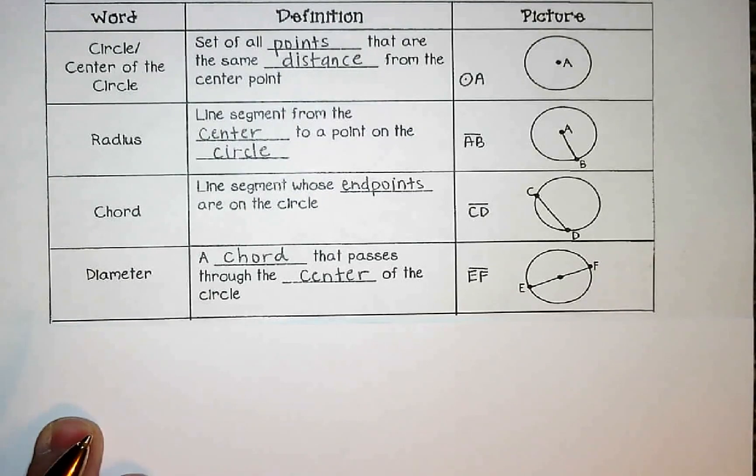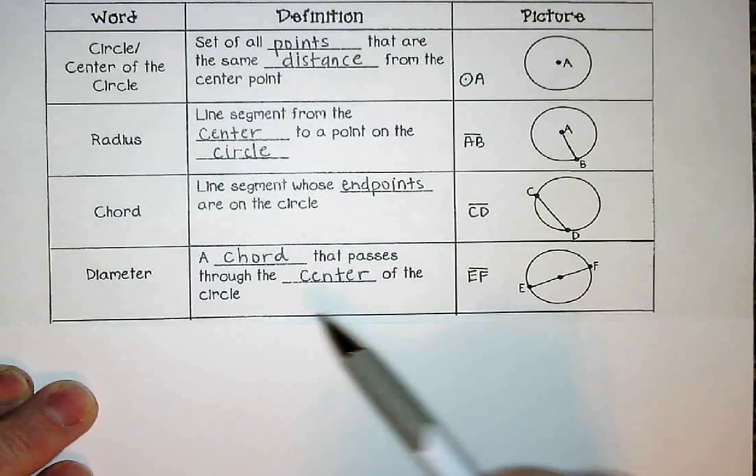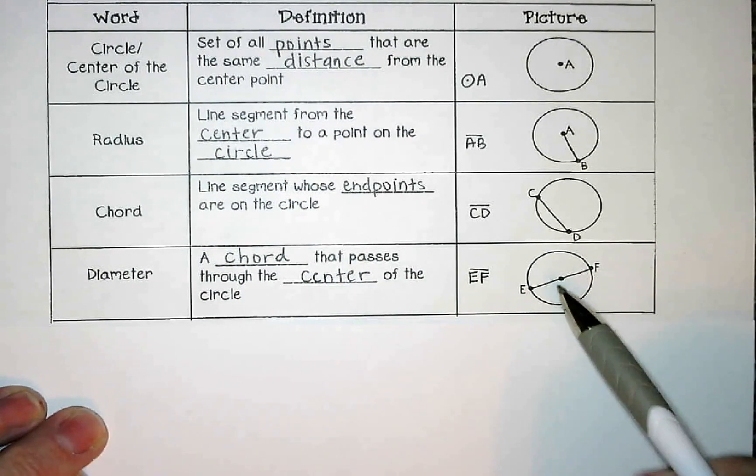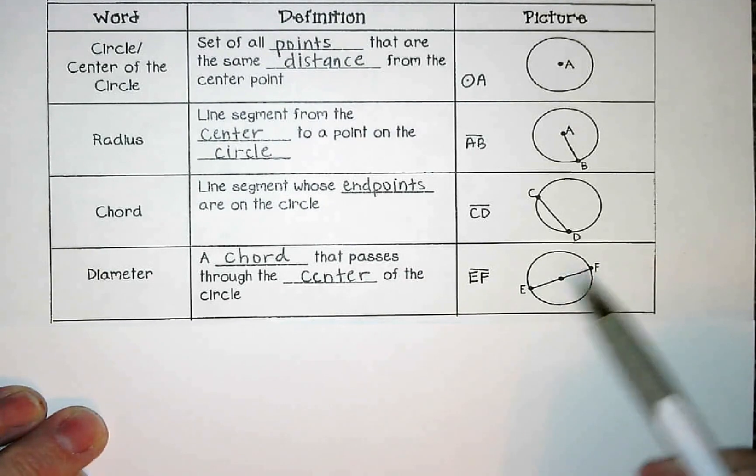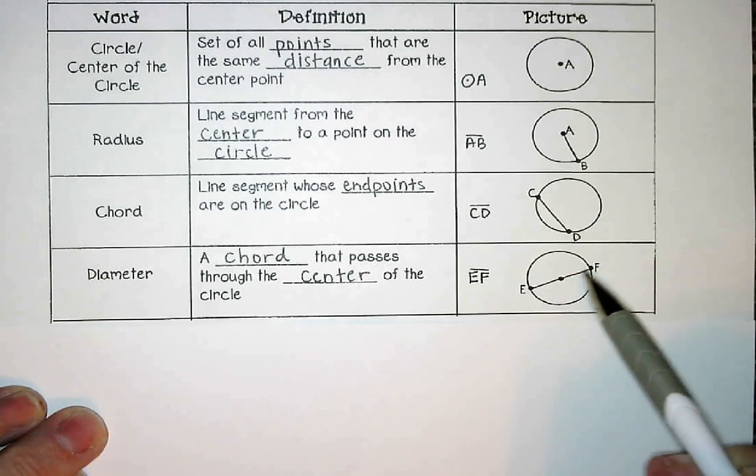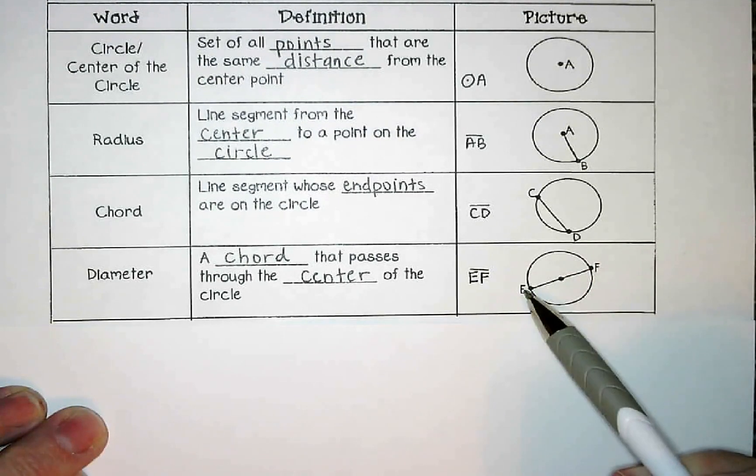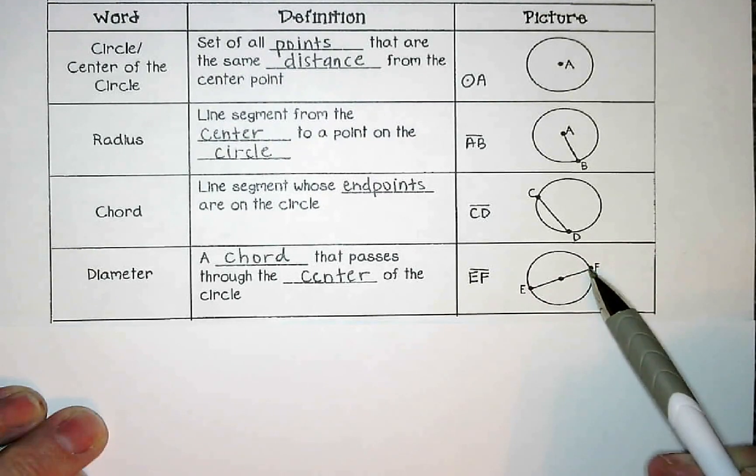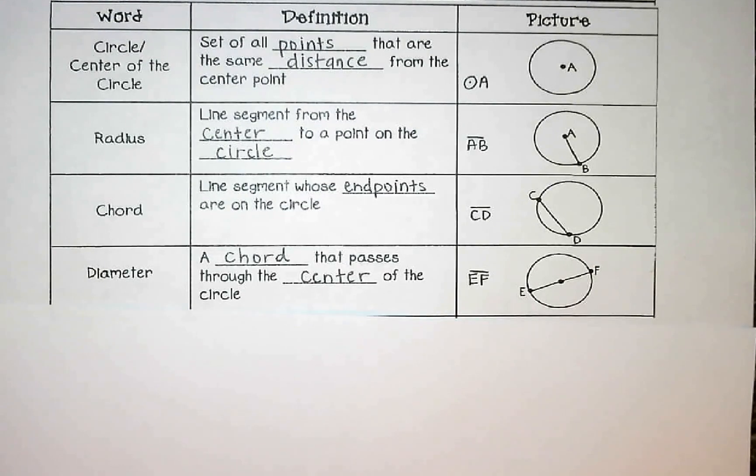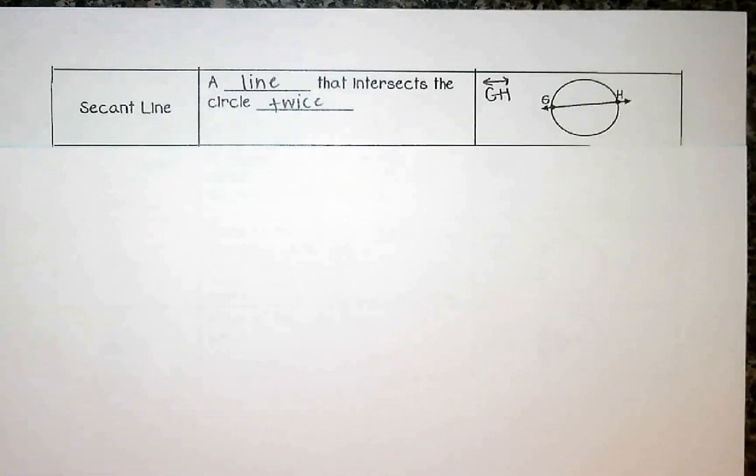Diameter is a chord that passes through the center of the circle. Now on your notes, yours might be on the next page here. Sorry about that. So a chord that passes through the center. So here's the center. We have a chord that goes from endpoint to endpoint. That going all the way through the center is called the diameter. If I go from the center out, that's the radius. If I go from one side to the other, that's the diameter. And again, it's a segment, so we would label that with its endpoints E and F. On your second page. I guess you're already on your second page. Sorry.